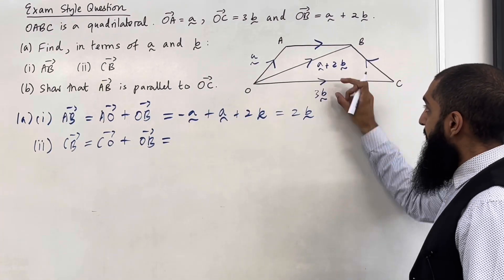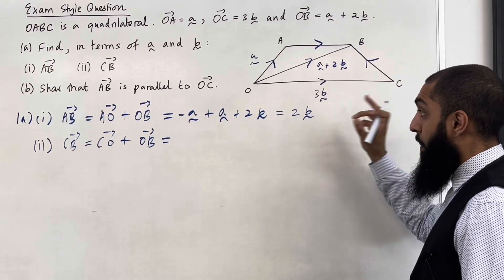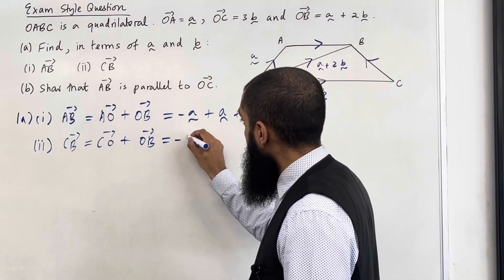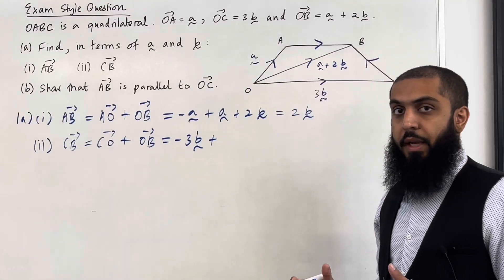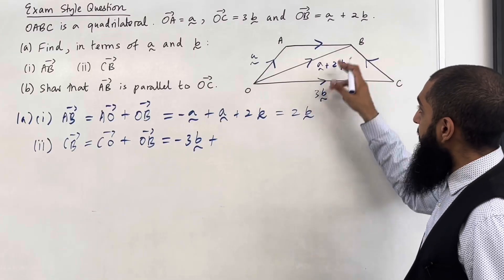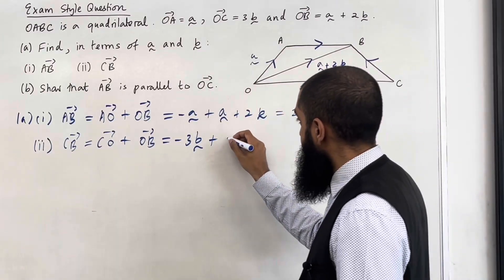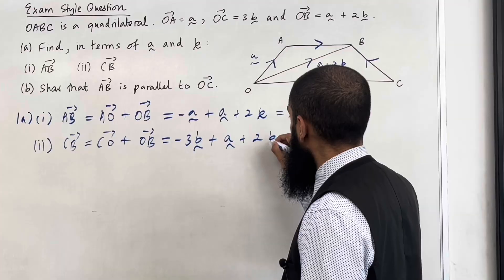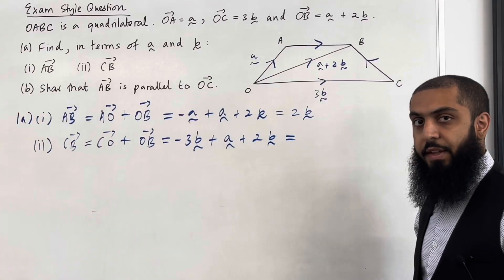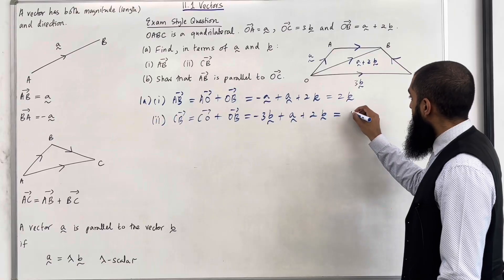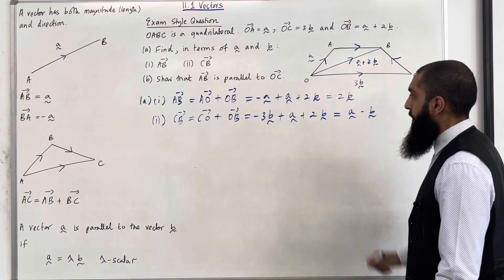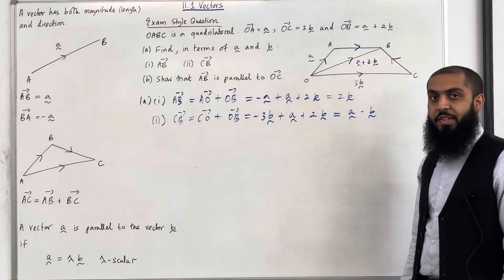C to O, we're going in the opposite direction of the arrow. So it will be minus 3B plus the vector O to B. So the vector O to B is A plus 2B. So we can now simplify this. We get A minus B. So that completes part A, part 1 and part 2.